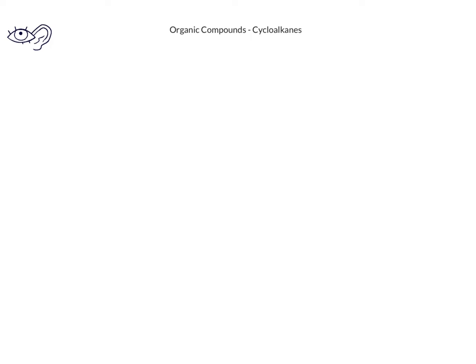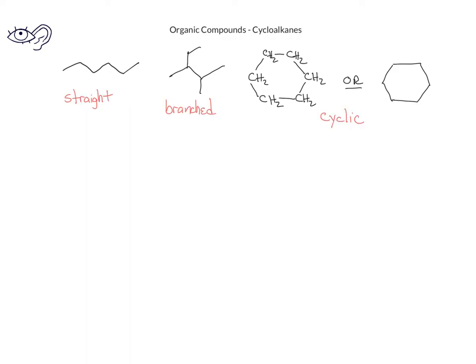In previous videos, we learned about straight chain and branched chain alkanes. In this video, we want to introduce another kind of alkane that forms rings. These are called cyclic alkanes or cycloalkanes.